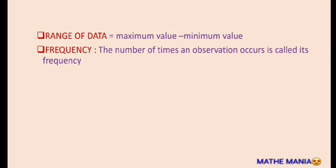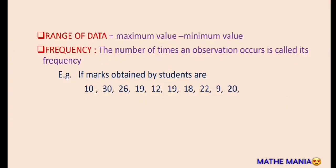Then we have frequency — it's the number of times any particular observation is occurring in the given data. To explain these terms, I'll take up this simple example. Here we have marks of 10 students. Can you find out the minimum and maximum values? They are 9 and 30, so the range of this data is 30 minus 9, that is 21.